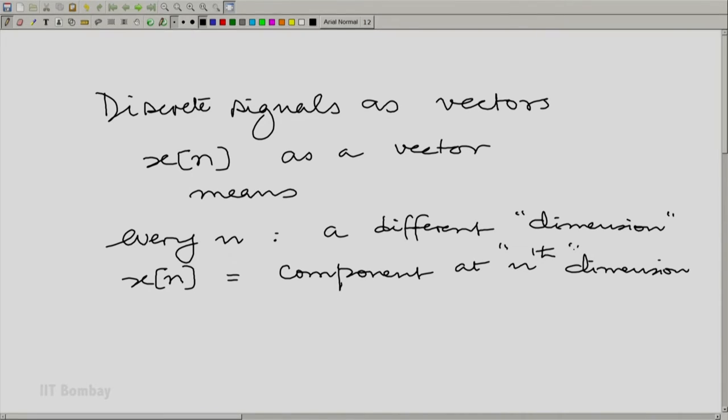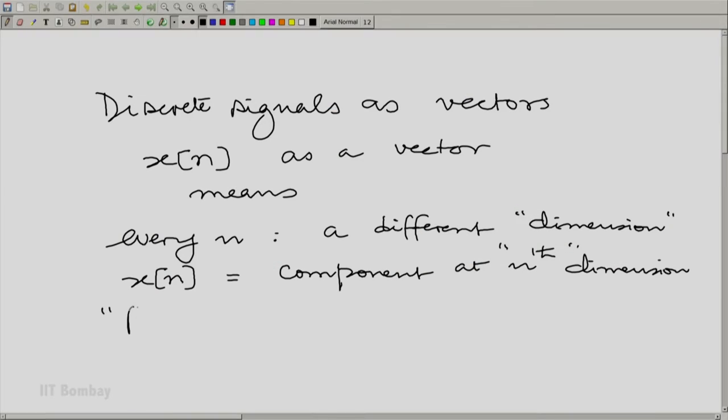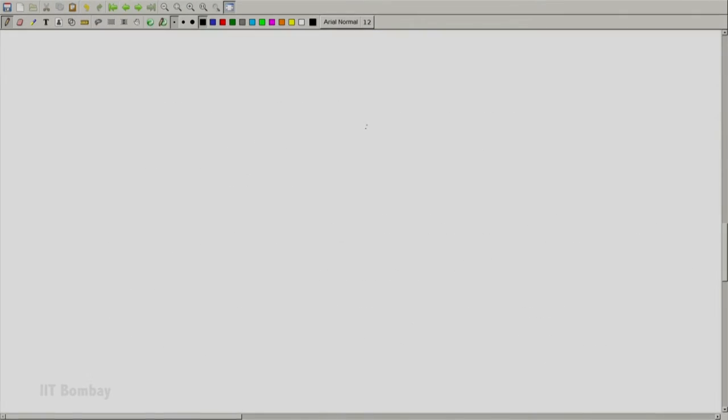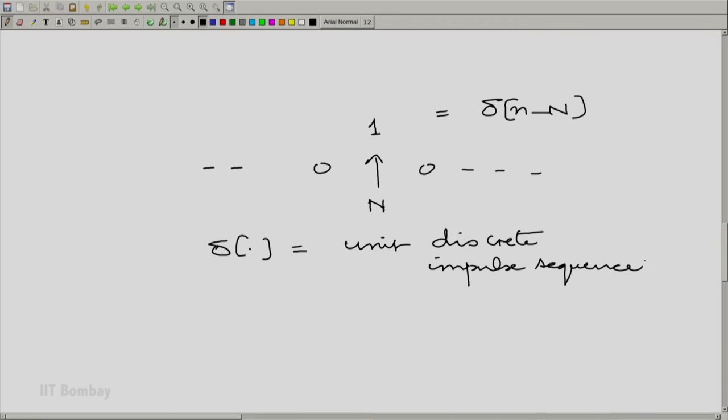In fact, now we can take one more step. Let us verify what happens if you describe two perpendicular components in this language. The perpendicular components, perpendicular or orthogonal as we call them, are essentially the unit discrete impulses. For example, if I have a 1 at the location capital N and 0 everywhere else, this is essentially the sequence delta N minus N, where delta denotes the unit discrete impulse or unit discrete impulse sequence. For every different capital N, a different unit vector.